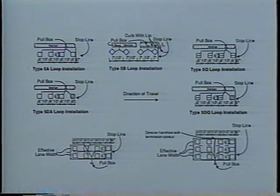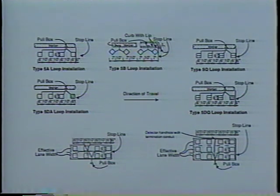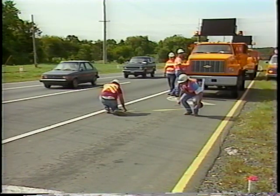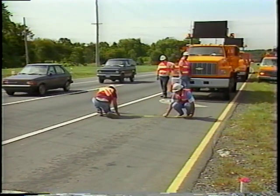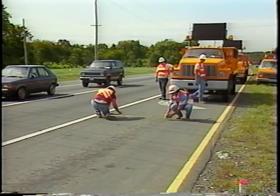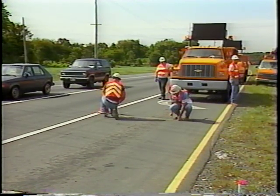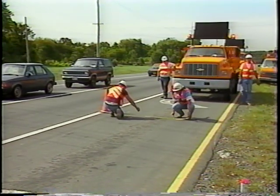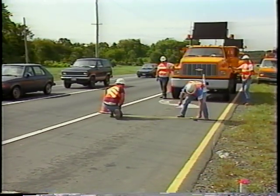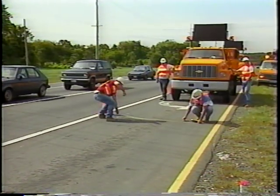Several states, such as California, specify loop shapes that are acceptable in their jurisdiction. When choosing a configuration, consider the loop shape that will allow maximum detection with the least chance of splash over into adjacent lanes.